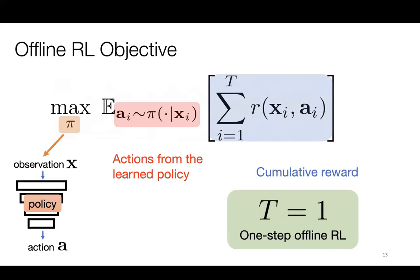For some visualizations in this talk, I consider the simpler setting where the horizon H is set to one — the contextual bandit setting, or one step of offline RL. This will be useful for visualizing ideas, but all the principles apply to the most general sequential setting.